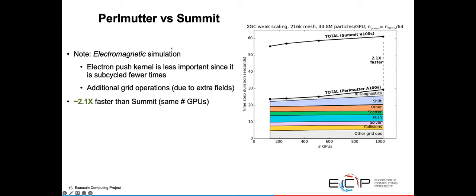Comparing Perlmutter to Summit. This is now an electromagnetic simulation, and we're comparing the x-axis number of GPUs. It's one V100 versus an A100 going up to 256 Perlmutter nodes. We had a 2.1x speed up compared to Summit, just on a GPU to GPU basis. As I said, in the electromagnetic simulation, the electron push kernel is less important because it's sub-cycled fewer times. This really changes the most important kernels that need to be optimized. We're still working on optimizing the electromagnetic version as opposed to the electrostatic version.